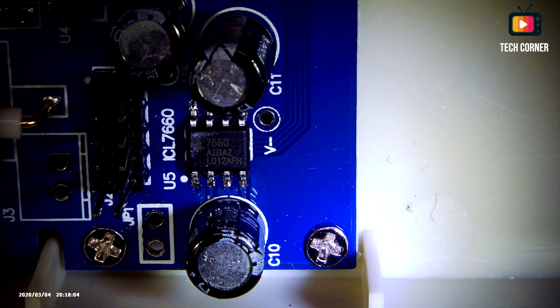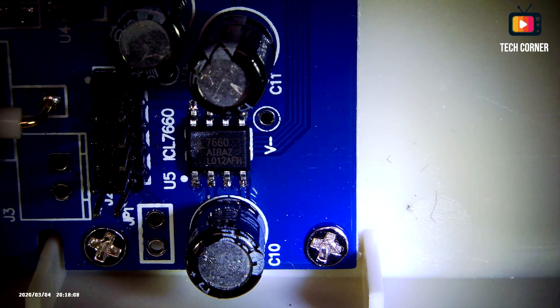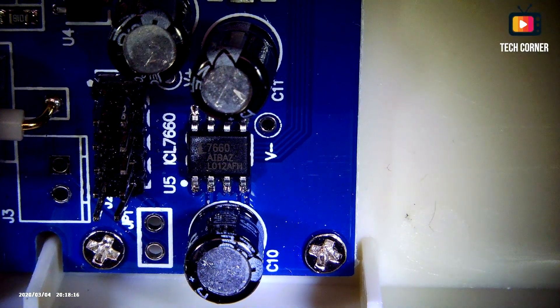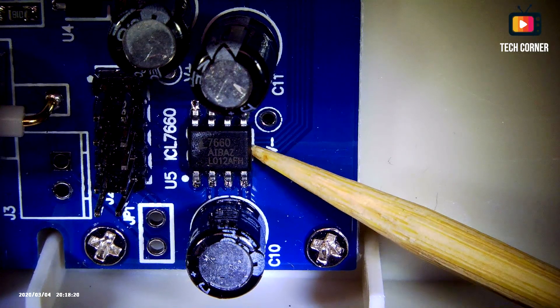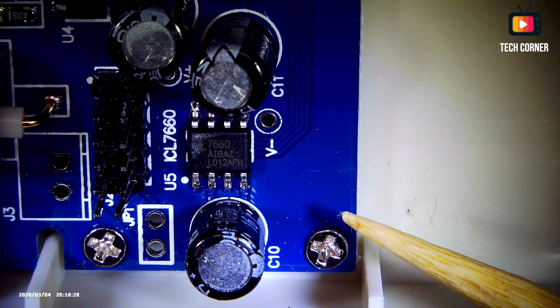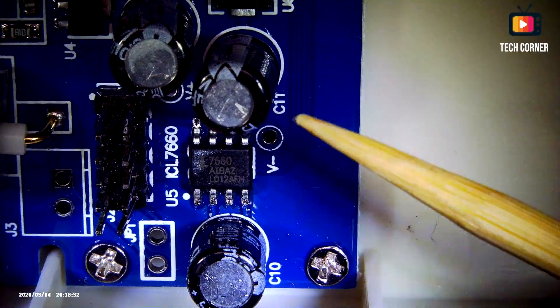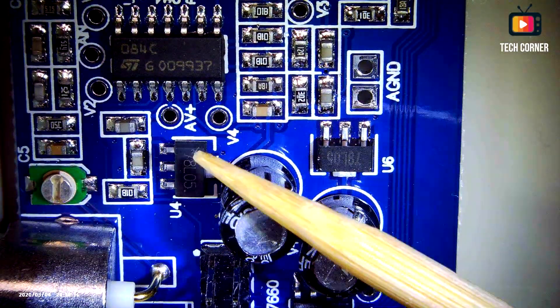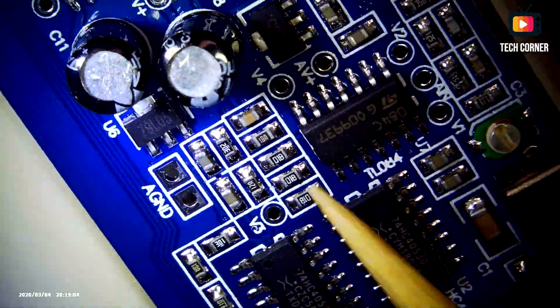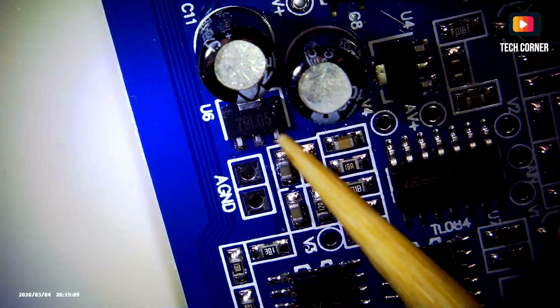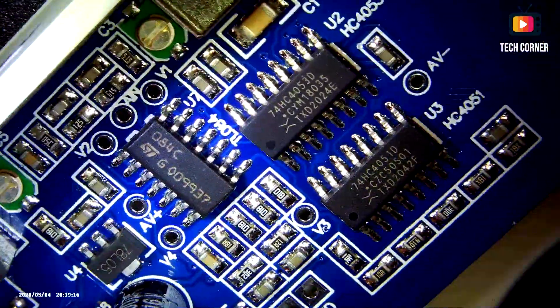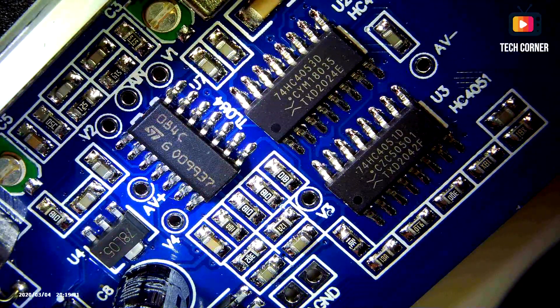So the first IC that we have here that's worth mentioning is an ICL 7660. It's a CMOS voltage converter. It is able to do conversions for positive and negative 5 volts supply. And we also have a 78L05 terminal positive regulator and terminal negative regulator. Also a TL084. It is a quad high slew rate JFET input operational amplifier.